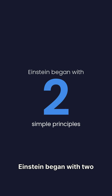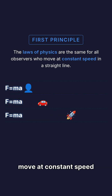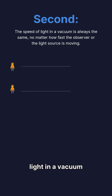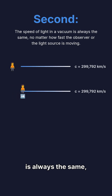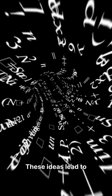Einstein began with two simple principles. First, the laws of physics are the same for all observers who move at constant speed in a straight line. Second, the speed of light in a vacuum is always the same, no matter how fast the observer or the light source is moving. These ideas lead to extraordinary consequences.